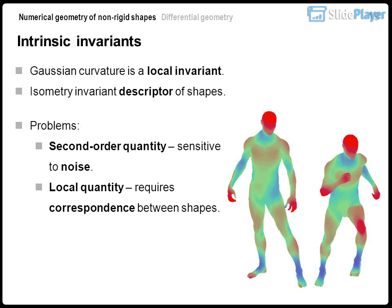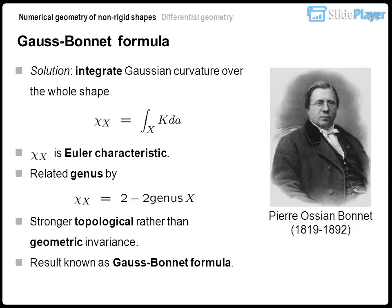Intrinsic invariance: Gaussian curvature is a local, isometry-invariant descriptor of shapes. Problems: it is a second-order quantity sensitive to noise, and as a local quantity it requires correspondence between shapes. Solution — Gauss-Bonnet formula: integrating Gaussian curvature over the whole shape yields the Euler characteristic, related to genus — a stronger topological rather than geometric invariant. This result is known as the Gauss-Bonnet formula. Pierre Ossian Bonnet, 1819–1892.